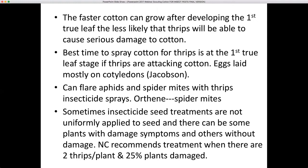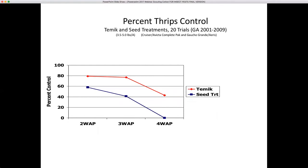In that situation, North Carolina recommends treatment when there are two thrips per plant and 25% of the plants are damaged. Research from Philip Roberts in Tifton, Georgia, looking at long-term efficacy of neonicotinoid seed treatments compared with Temik (aldicarb) — a combination average of 20 trials — found that two weeks after planting he was getting 60% control with seed treatment versus 80% with Temik, and it drops to 40% at three weeks. We normally assume two to three weeks of efficacy from a neonicotinoid seed treatment, measured from planting, not from emergence.